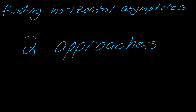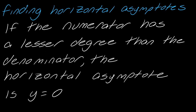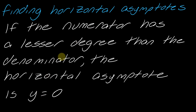Horizontal asymptotes can be a little trickier, and there are two approaches. The first approach has more of a precalculus mindset — it doesn't really get to the underbelly of why, but it will definitely get the job done. With the precalculus way, we look at the numerator and denominator: if the numerator has a lesser degree than the denominator, then the horizontal asymptote is going to be y equals zero.